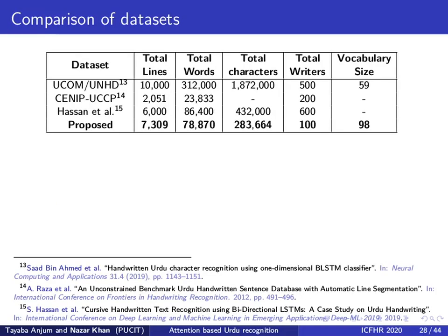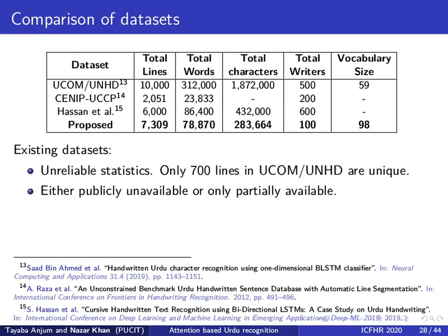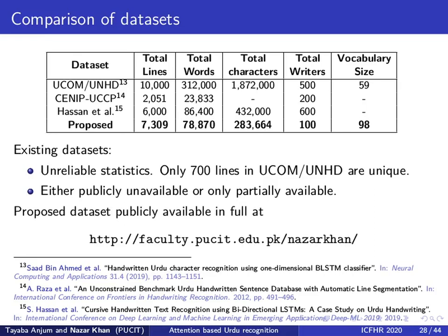Here is a comparison of our dataset with three existing datasets for handwritten Urdu. There are two problems with existing datasets. First, data statistics are sometimes not reported correctly — for instance, while the UCOM UNHD dataset claims to have 10,000 text lines, only 700 of those lines are unique in terms of semantic content. Second, all three datasets are either publicly unavailable or only partially available. Our dataset is available at the given link.